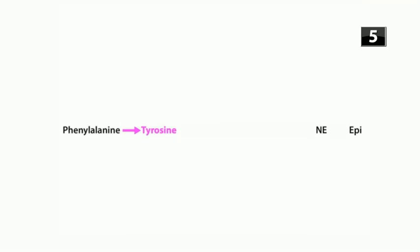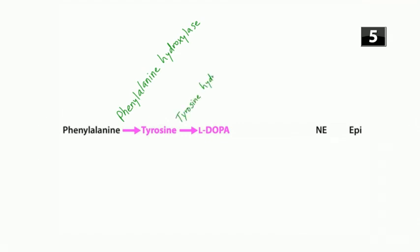Phenylalanine is converted to tyrosine by the enzyme phenylalanine hydroxylase. If you're deficient in phenylalanine hydroxylase, that leads to PKU or phenylketonuria — we'll talk about PKU more in the biochem section. Tyrosine is then converted to dopa by tyrosine hydroxylase.